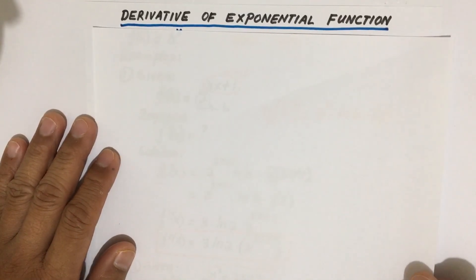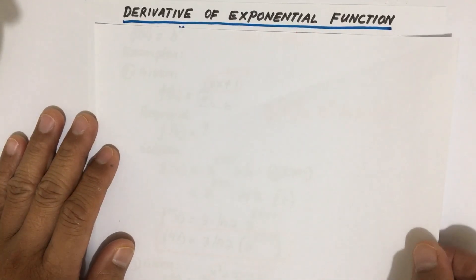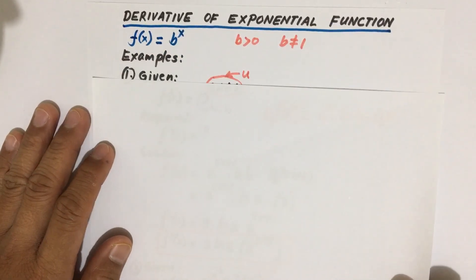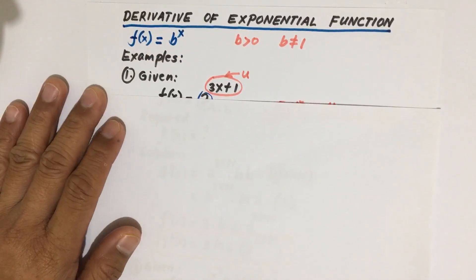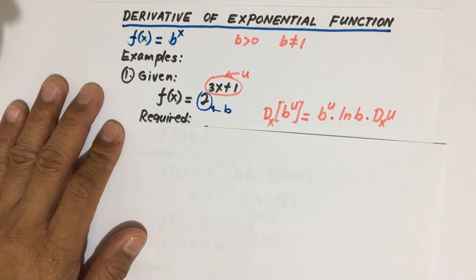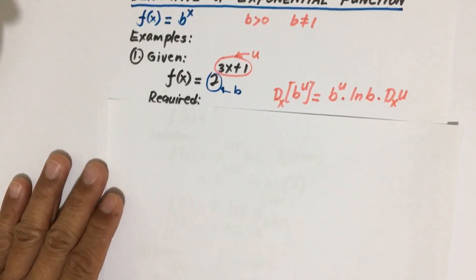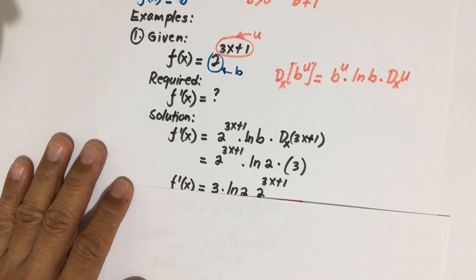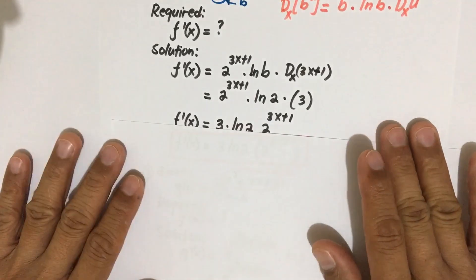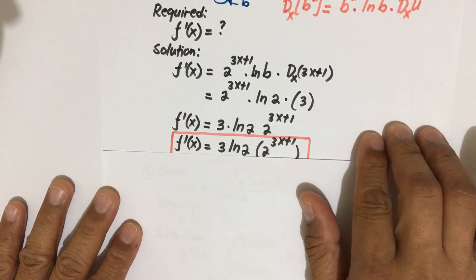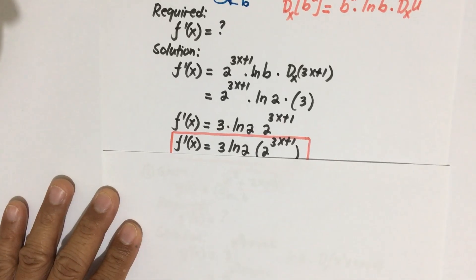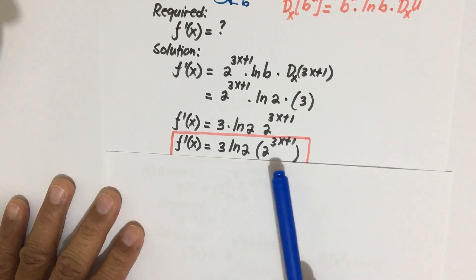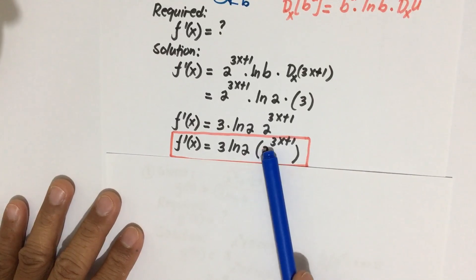Hello class, let us continue our discussion on the derivative of exponential functions. Before we go to the next example, I'd like to review a little bit of our previous example because it was cut off due to a memory issue with my mobile phone. So we have here the solution from last time, and our final answer is a'(x) equal to 3 times ln 2 times 2 to the 3x plus 1.